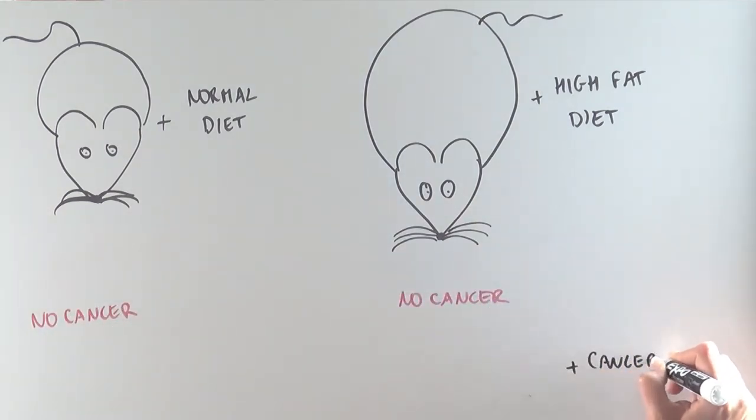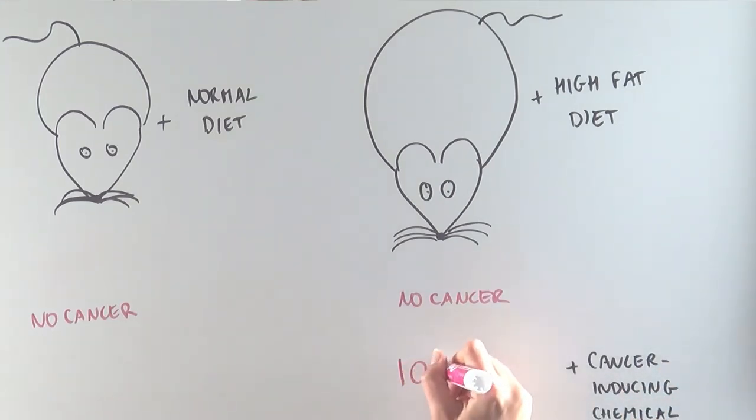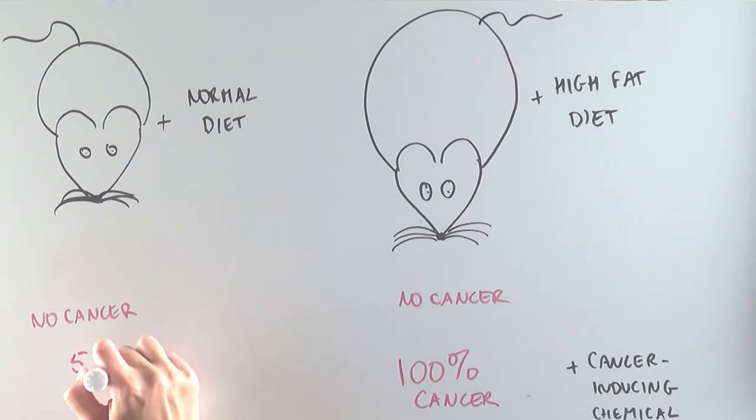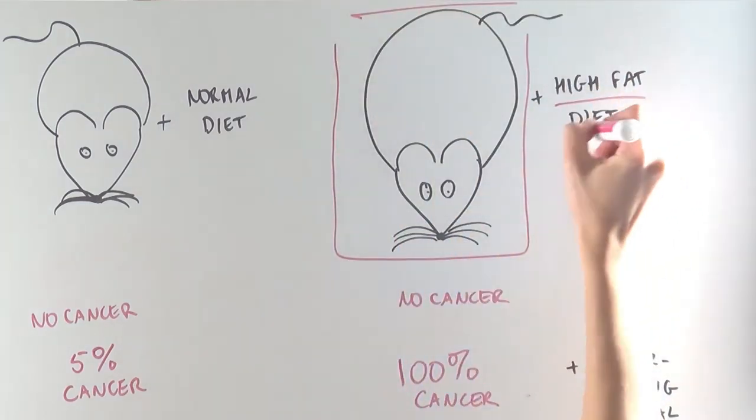But when this treatment was combined with a cancer-inducing chemical, 100% of obese mice fed a high-fat diet developed cancer, compared to only 5% of lean mice fed a normal diet. But the question is, is this due to the fact that the mice were obese, or to the fact that they were eating a high-fat diet?